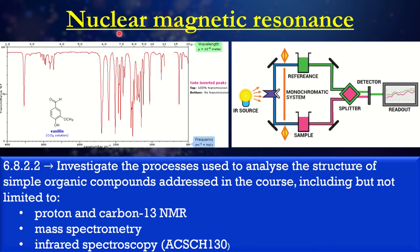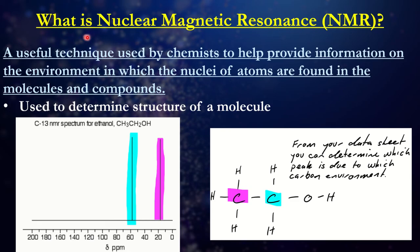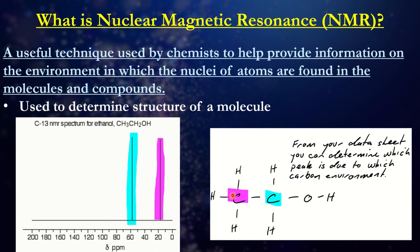We are going to be investigating nuclear magnetic resonance. NMR is a useful technique that chemists use to glean information about the environment in which nuclei or specific atoms are structured relative to each other. For example, in a diagram of NMR for ethanol, we have two lines representing the number of carbon environments. These two carbons form two different types of bonds to each other, giving us an indication of the number of peaks.